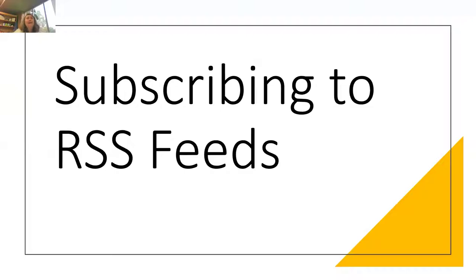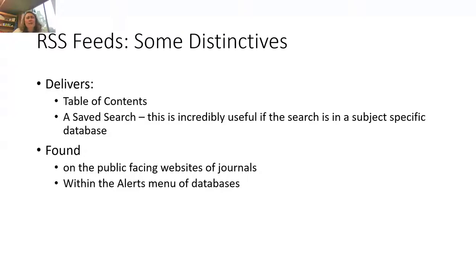One of the key things you can do to really transform your scholarship and have current academic research in your inbox is to subscribe to RSS feeds. With academic research, you do need that table of contents — you need a reminder to check in with that journal. You can save a search or the table of contents, and these RSS feeds are found in various ways: some on public-facing journal websites, some within the database itself.